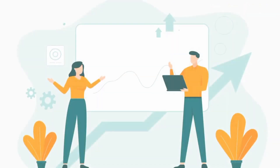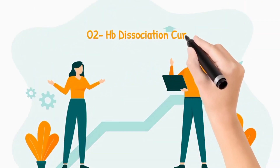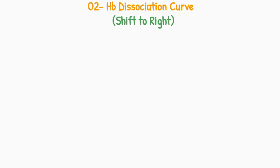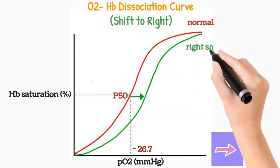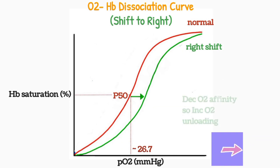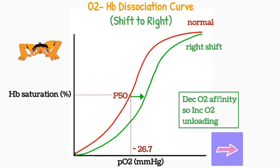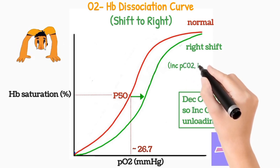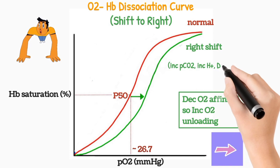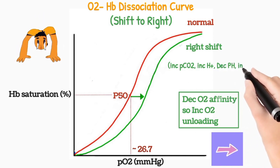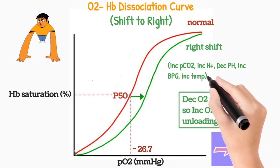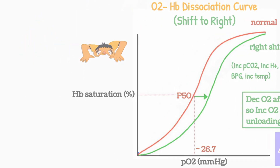Now we will discuss the shifting of the oxygen hemoglobin dissociation curve. The right shift shows decreased oxygen affinity of hemoglobin, so there is increased oxygen unloading in tissues. This occurs in exercising muscles in which carbon dioxide is actively produced; resultantly, proton concentration increases and pH becomes low. Also in exercising muscles, the concentration of 2,3-bisphosphoglycerate increases due to glycolysis and temperature also increases. All these factors shift the oxygen hemoglobin dissociation curve to the right.